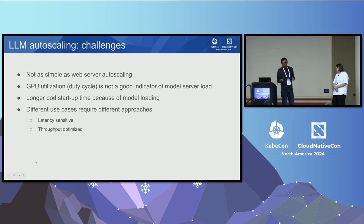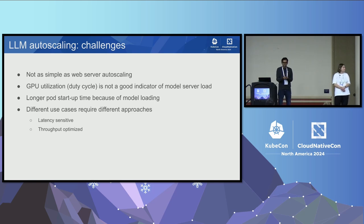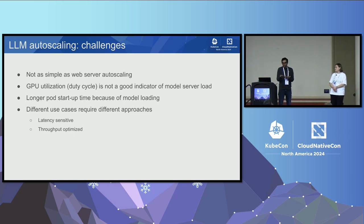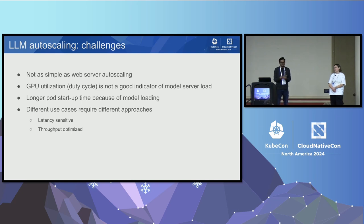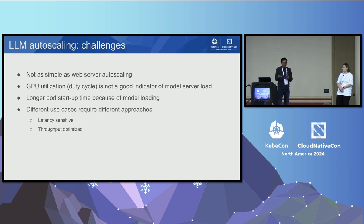There are challenges with autoscaling Gen AI or LLM workloads. It's not as simple as web server autoscaling where you set CPU utilization and it just works. You might wonder — why not use GPU utilization? From our experimentation, that's often not reliable. There's also the longer pod startup time: in the demo it took about two minutes to load a 7-billion-parameter model — a considerable amount of time when you're not yet reacting. And there are different use cases: offline inference may want to maximize throughput regardless of latency, while latency-sensitive workloads like code completion require suggestions to appear instantly as you type.